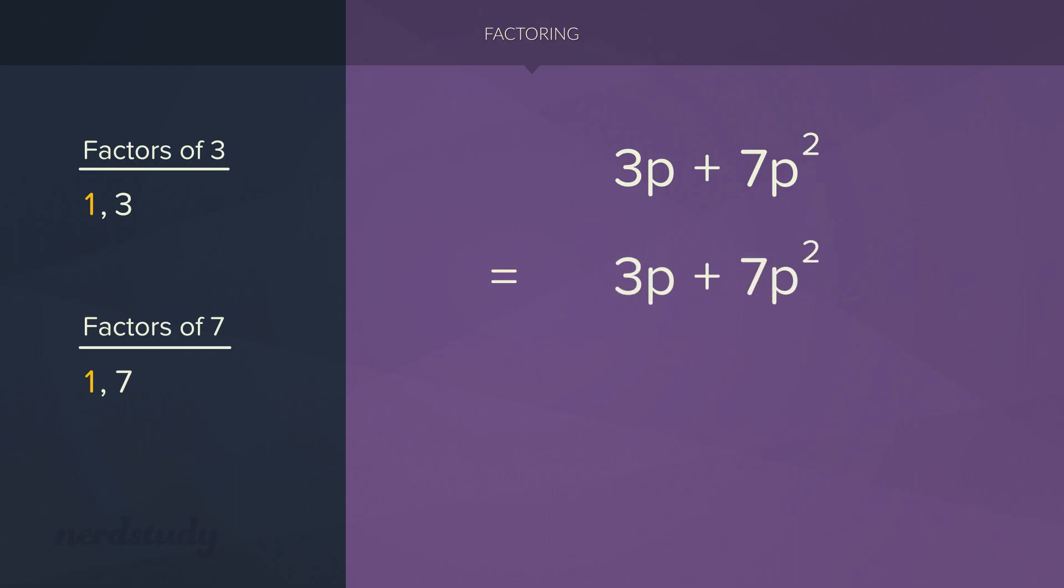But we can factor something else out here. As you can see in the first term, we have a multiplication of 3 and p. In our second term, we have a multiplication of 7p and another p. After all, p squared is p times p. So if p is being multiplied to both the first term and the second term, then we can factor out a p. What we would end up getting is p times bracket 3 plus 7p.